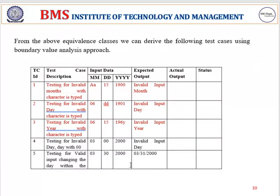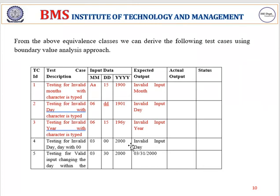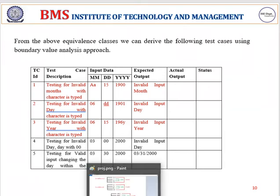These are the test cases we have generated. Some inputs are taken as strings, which should give an invalid result — this checks whether the type of input is integer. Next, we test for an invalid day with value 0. When testing for an invalid input, one condition should be invalid while the others remain in the valid region. For example, third month and year 2000 are in the valid range, so first we check invalid date inputs.